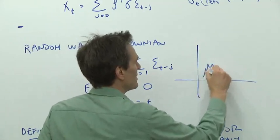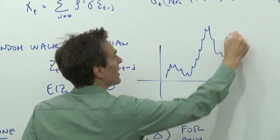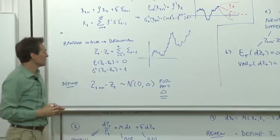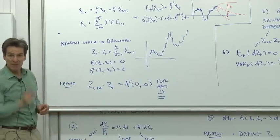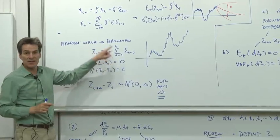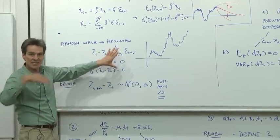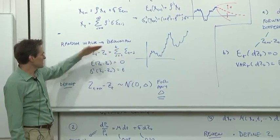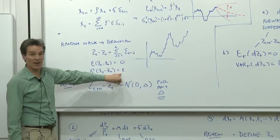Random walks walk randomly. They kind of go like this, wander around, go up and down. That's a familiar discrete time process. This turns out to be the useful thing to take to continuous time. So this process has a mean zero and a variance t.